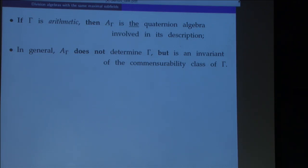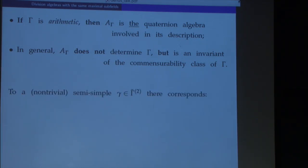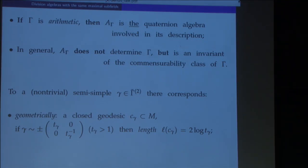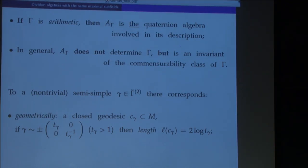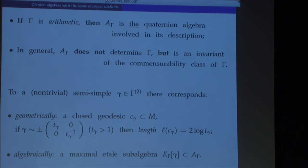Now let me explain how closed geodesics in the Riemann surface are related to the maximal étale subalgebras of that algebra. Given a semisimple element in our discrete subgroup, geometrically one can associate to it a closed geodesic in our Riemann surface. The length of that closed geodesic is the logarithm of the eigenvalue greater than one. Algebraically, corresponding to this element, we have an étale subalgebra of our quaternion algebra.